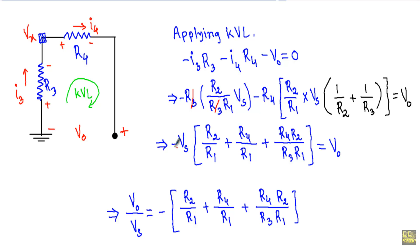Taking Vs as a common factor, I get minus Vs times the quantity (R2 by R1 plus R4 by R1 plus R4 R2 divided by R3 R1) equals Vo. Rearranging, the gain Vo by Vs equals R2 by R1 plus R4 by R1 plus R4 R2 divided by R3 R1. And this will be the gain of this operational amplifier circuit. That's it. Thank you.